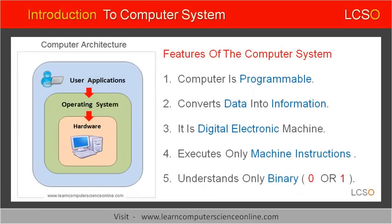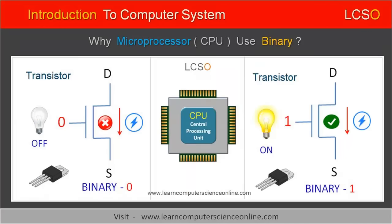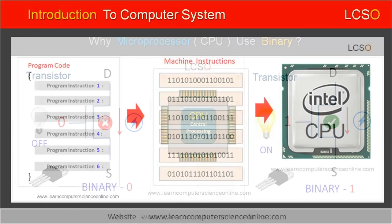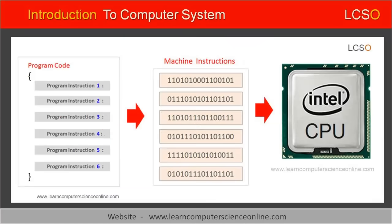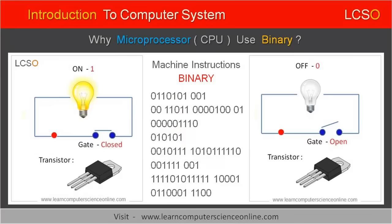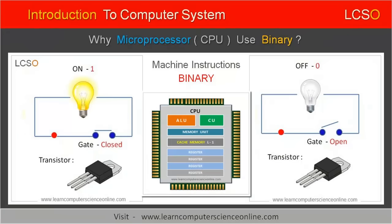The third feature is that the computer is a digital electronic machine. The computer is called a digital electronic machine because it contains electronic components and needs an electric current to operate. The term digital simply means the computer understands only the language of 0 and 1, called the binary number system. The computer can understand and execute instructions written only in binary. These instructions are called machine instructions, which in binary consist of only two numeric numbers: either 0 or 1.